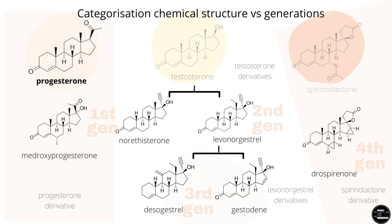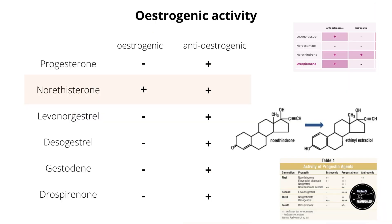This slide shows the two classification systems side by side. Now let's go through the steroid receptor activity profiles of the different progestins. There's some conflicting data with regard to some of the receptor activities, but this should give you a good idea of how they can differ from progesterone.